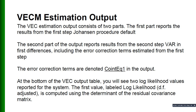The VECM estimation output consists of two parts. The first part reports results from the first-step Johansen procedure. The second part reports results from the second-step VAR in first differences, which includes the error correction terms estimated from the first step. The error correction terms are denoted CointEq1 in the output. This error correction coefficient must be negative, less than one, and significant — then we can say that if there is some divergence from the long-run relationship, there will be a speed of adjustment with which the model will go back to the long-run relationship.